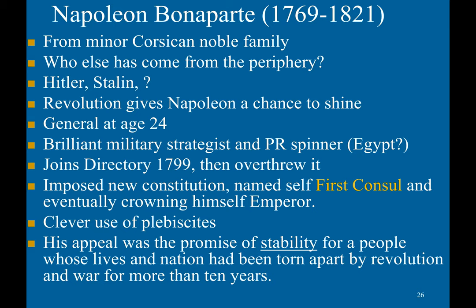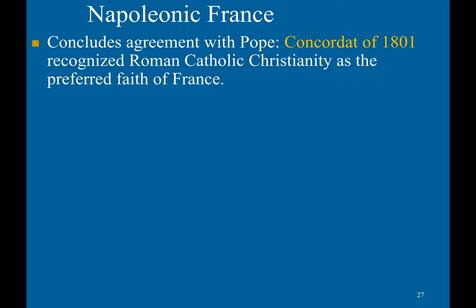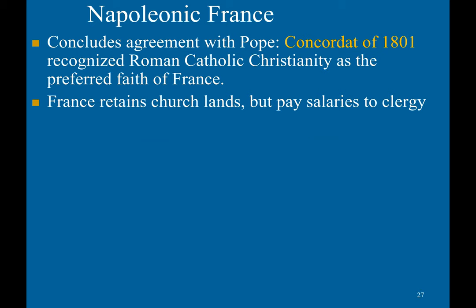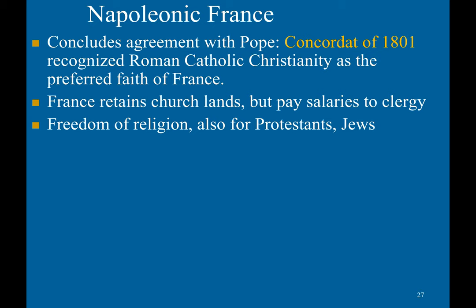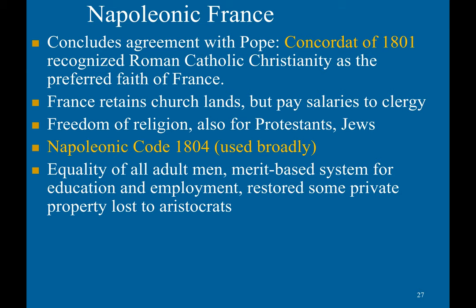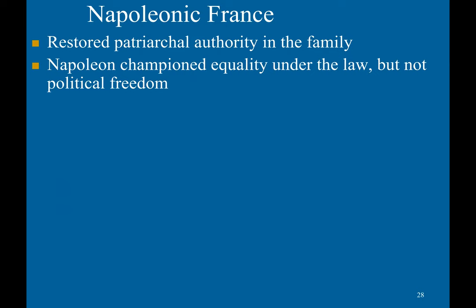He cleverly used public referendums to legitimize and solidify his rule. His appeal was a promise of stability for a people whose lives had been torn apart by revolution and war for more than 10 years. He concluded an agreement with the Pope — the Concordat of 1801 — which recognized Roman Catholic Christianity as the preferred faith in France; however, France retained the church lands but paid salaries to clergy, and there was also freedom of religion for Protestants and Jews. He also wrote the Napoleonic Code, still used broadly in the world today. It granted equality of all adult men, established a merit-based system for education and employment, and restored some private property lost by aristocrats. However, he restored patriarchal authority in the family. Napoleon championed equality under law, but not political freedom.